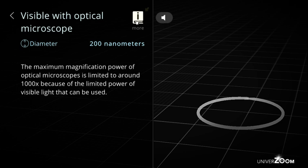Visible with optical microscope, diameter: 200 nanometers. The maximum magnification power of optical microscopes is limited to around 1000x because of the limited power of visible light that can be used.